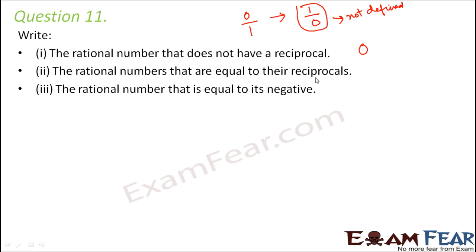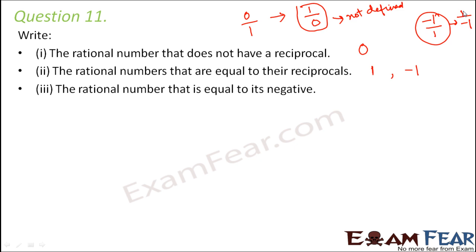The rational numbers that are equal to their own reciprocals are 1 and -1. The reciprocal of 1 is 1, and -1 written as -1/1 has reciprocal 1/(-1), which equals -1. The rational number equal to its own negative is 0, because +0 and -0 are the same — 0 is always 0.